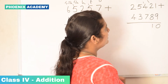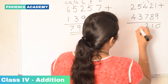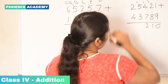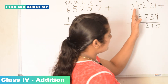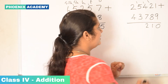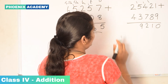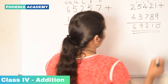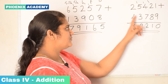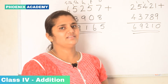4 plus 7 is 11, plus 1 carry is 12. We write 2 in the hundreds place and 1 is carry-forwarded to the thousands place. Let's add the thousands values: 5 plus 3 is 8, plus 1 carry is 9. Then 2 plus 4 is 6. So 25,421 plus 43,789 is 69,210.